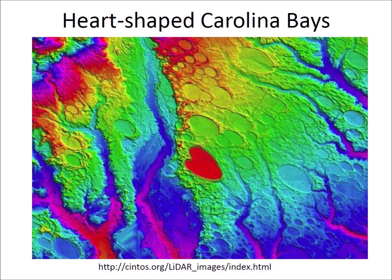The Carolina Bays are shallow elliptical depressions along the east coast of the United States. They occur on unconsolidated soil close to the water table, and their major axis is oriented toward the Great Lakes. Impacts and the action of wind and water have been proposed as mechanisms for their origin, but the heart-shaped bays are explained more satisfactorily as the result of impacts.